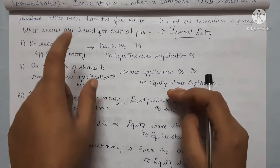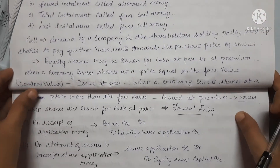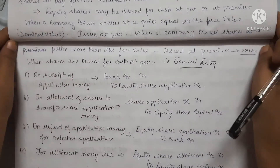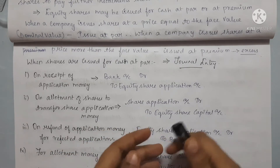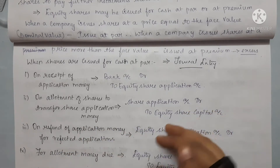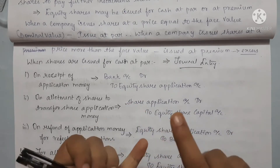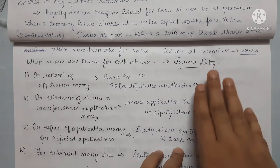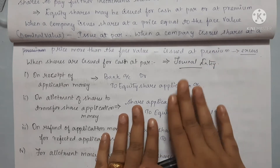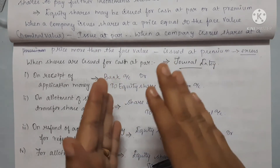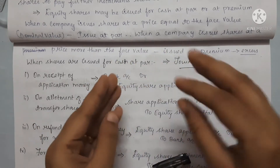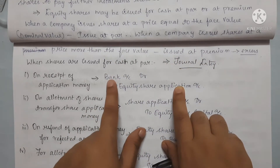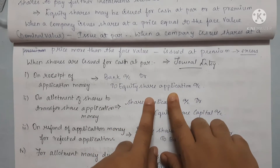First is the application money. The application money is the amount received when investors apply for shares. We receive 5% of the face value of 100 rupees as application money. The first journal entry is: Bank Account debit to Equity Share Application Money — we receive the application money.